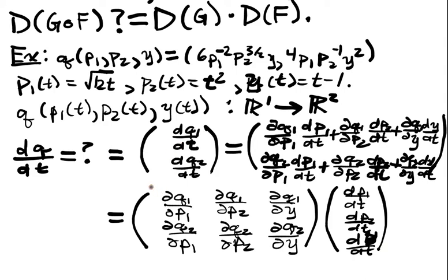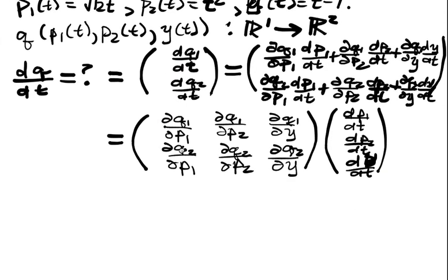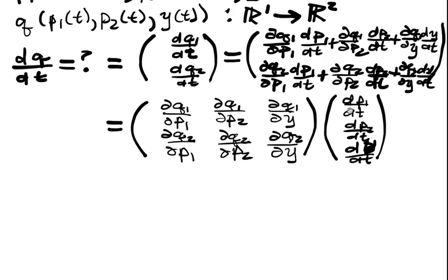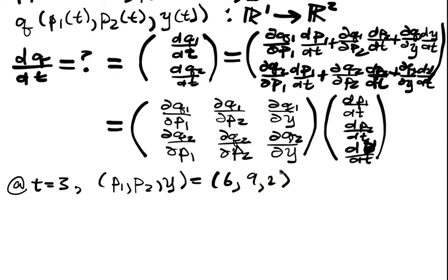That's great, that gives me a nice expression and if I knew the Jacobian here and also the velocity vector here I can evaluate this. And we've cooked it so that at t equals 3 we have that p1, p2, y now functions of t will evaluate to be 6, 9, 2 from the last time.